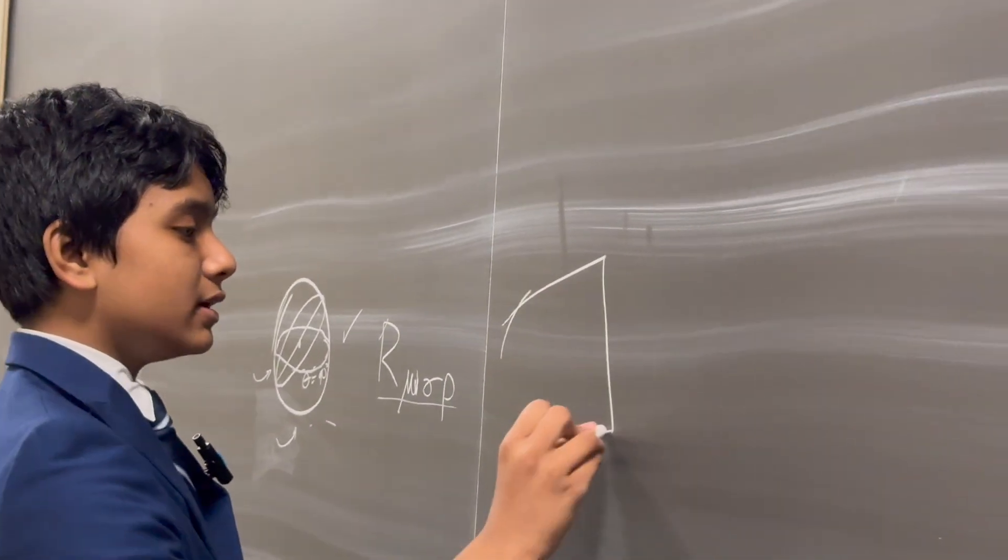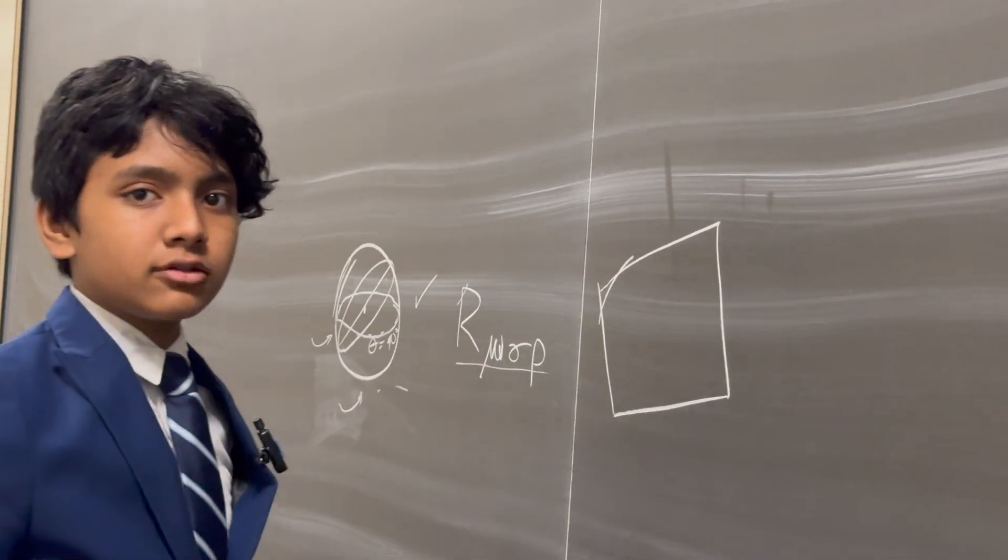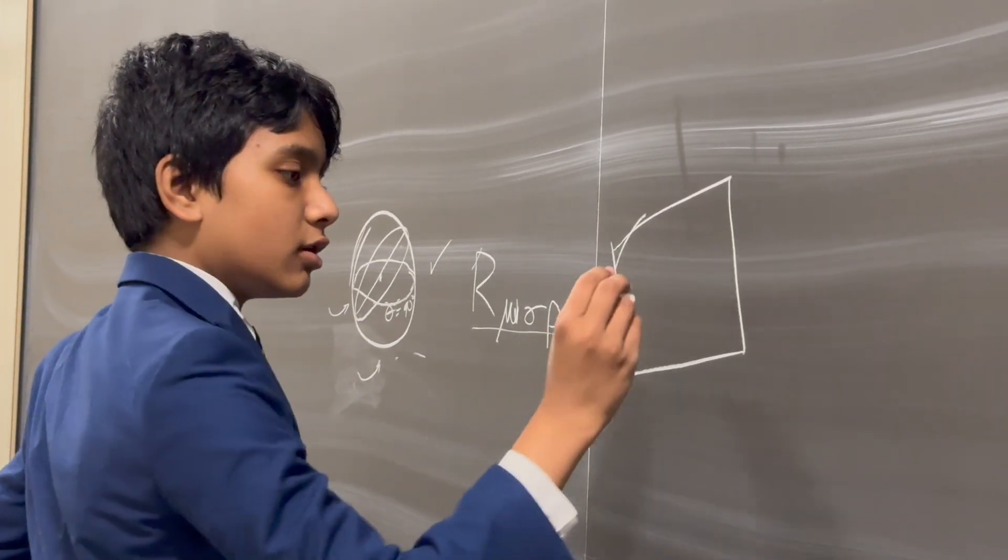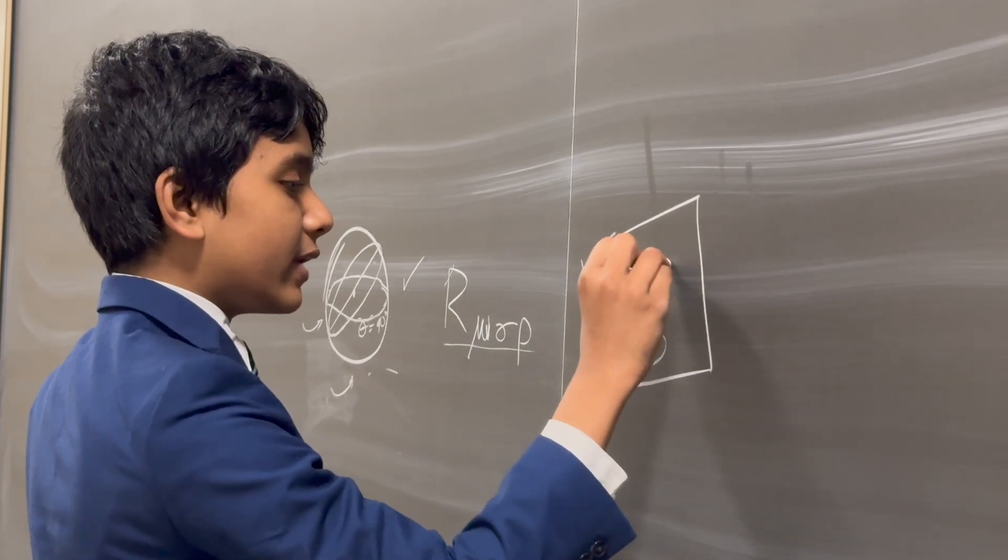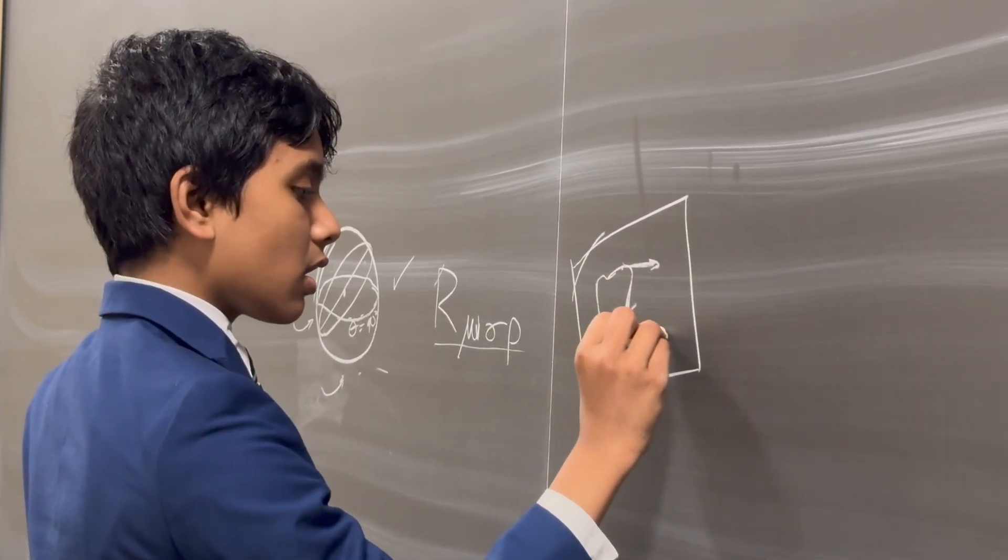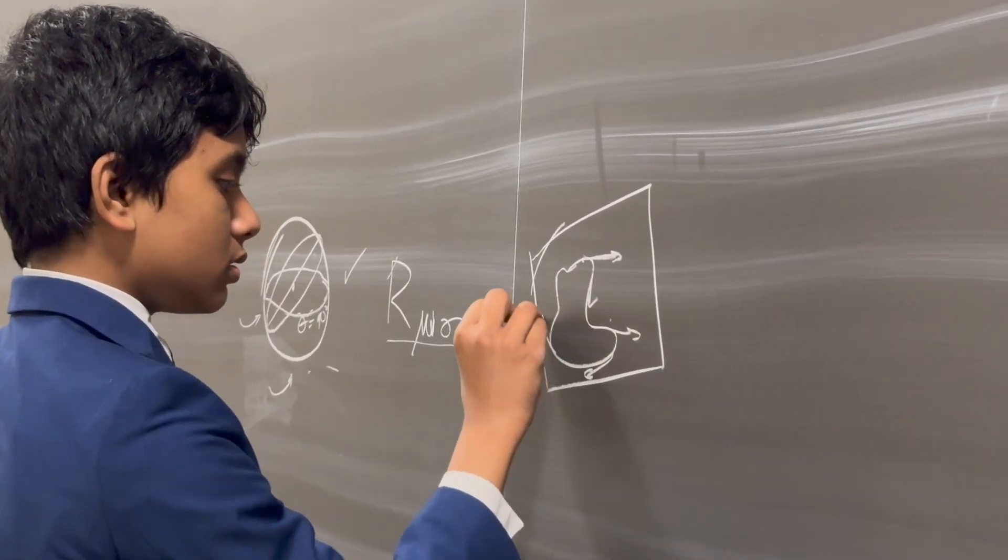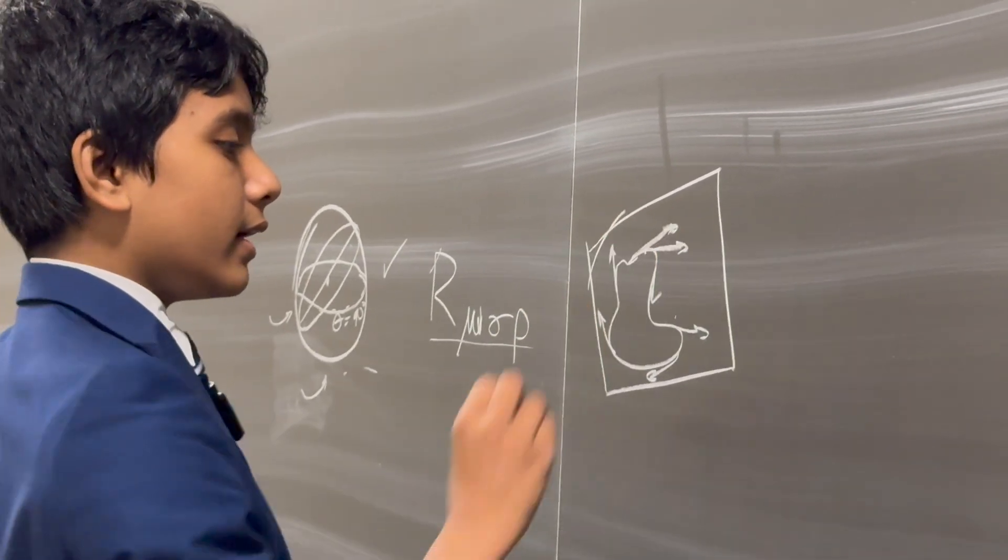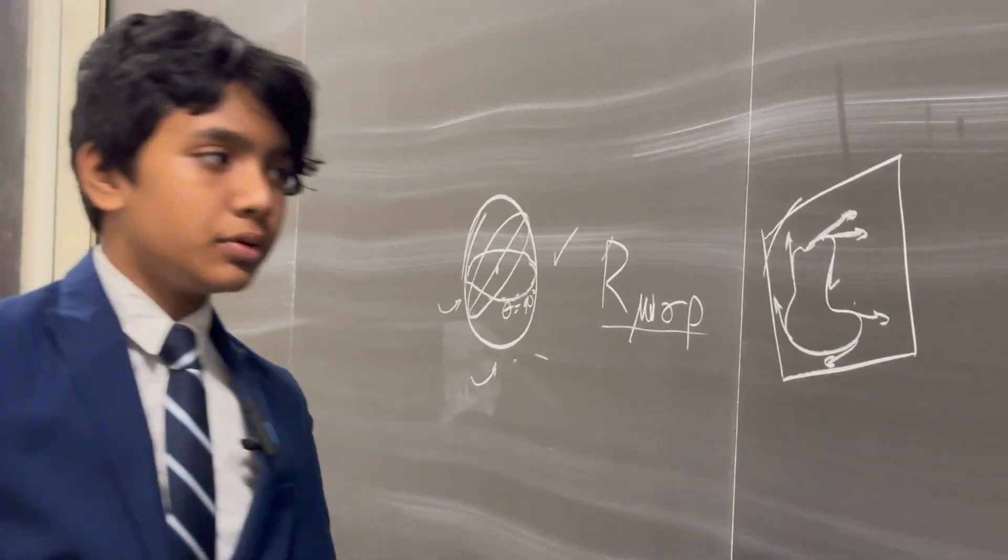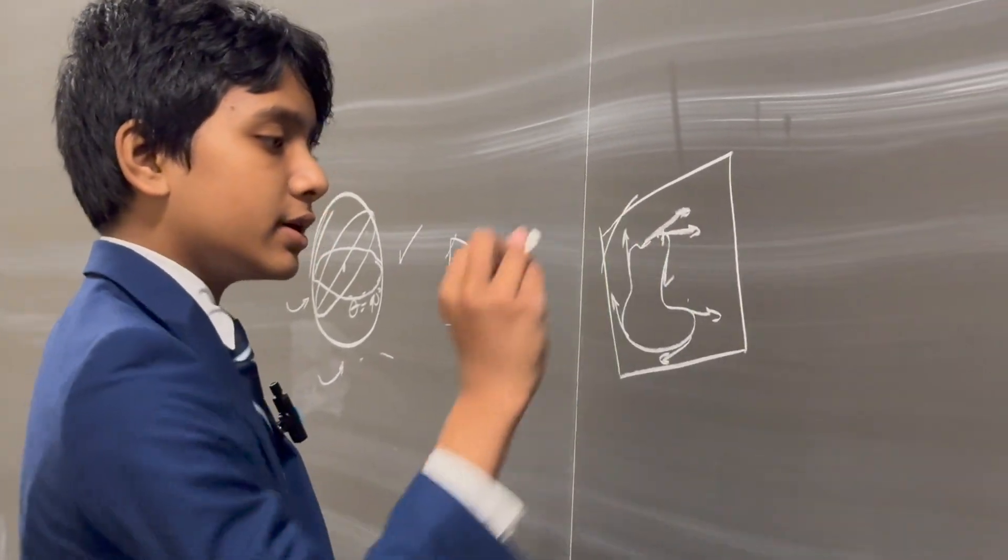in flat space we talked about the concept of parallel transport two lectures ago. So in flat spacetime, if you take the tangent vector around the curve, then it will return to its original shape once it starts from its initial point again.